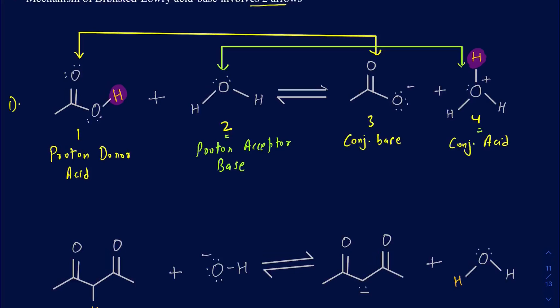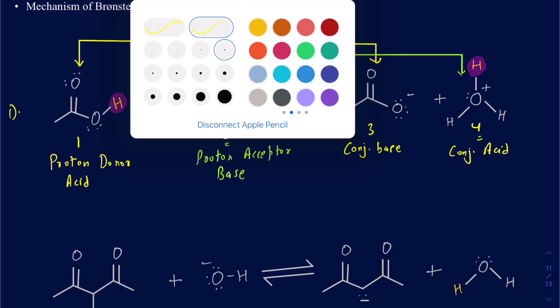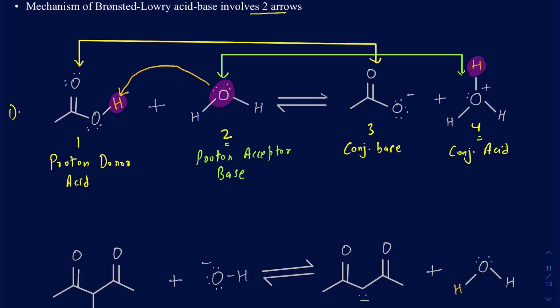How does the mechanism work? There are going to be two arrows. Your first arrow starts from the electron-dense region — the base — and goes in to grab the proton. That's one arrow going from the electron-dense region to the electron-deficient hydrogen. Then, as the base accepts the proton, the bond between the oxygen and hydrogen breaks, and that bond's electrons go onto the oxygen. Those are the two arrows you'll always see in a Brønsted-Lowry acid-base mechanism.